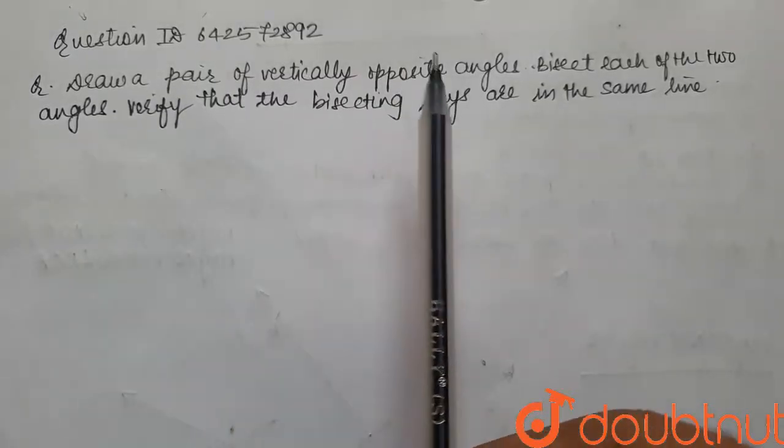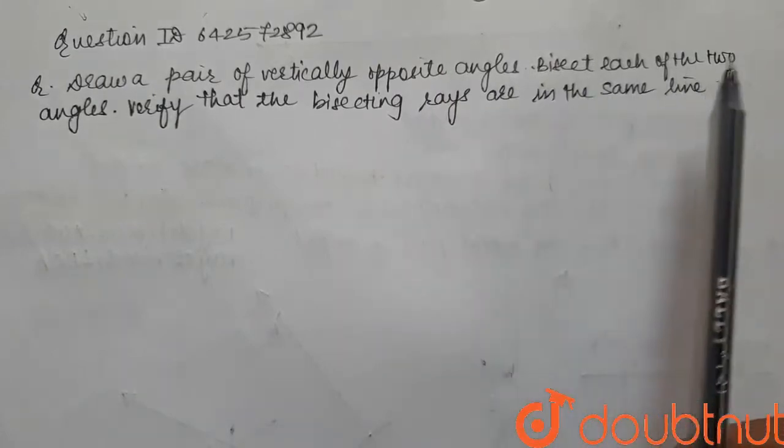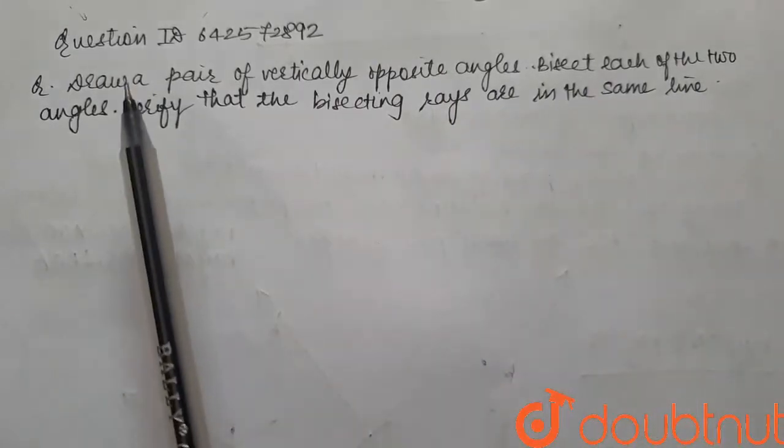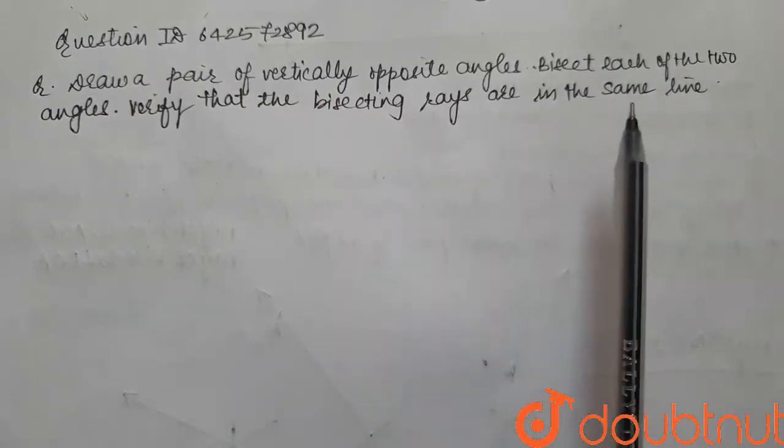Draw a pair of vertically opposite angles, bisect each of those two angles and then finally verify that the bisecting rays are in the same line.